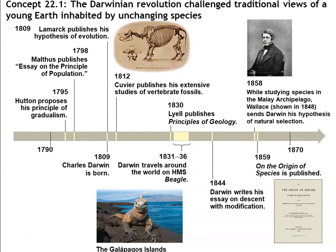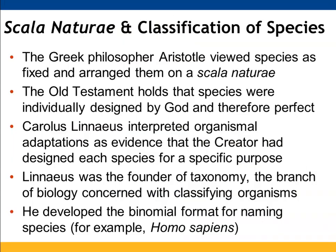Darwin's ideas on evolution challenged a lot of traditional views. There was a lot going on during Darwin's time about Earth and how it was inhabited by species that were not changing. Aristotle looked at species as being fixed, arranging them on a scala natura. The Old Testament holds that species are individually designed by God and therefore perfect. Linnaeus looked at adaptations that organisms developed as evidence that the creator had designed each species for a specific purpose.